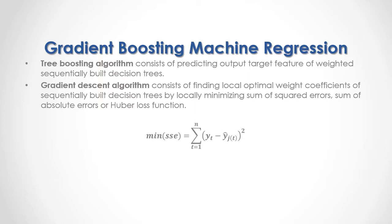As a formula, here we have the example of the minimization of sum of square errors, which is equal to the sum from the first to the last of the difference between output target feature data minus the sequentially built decision trees weighted output target feature prediction sum, raised to the power of 2.